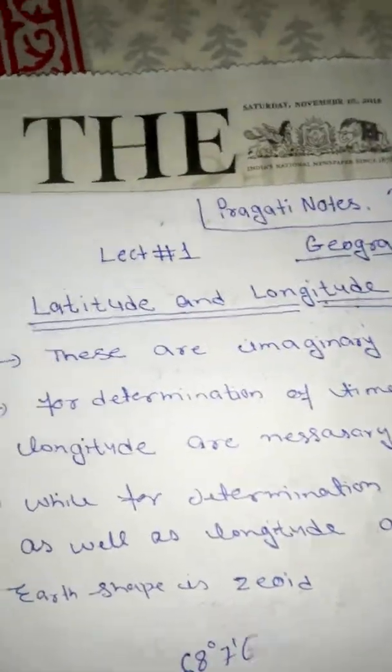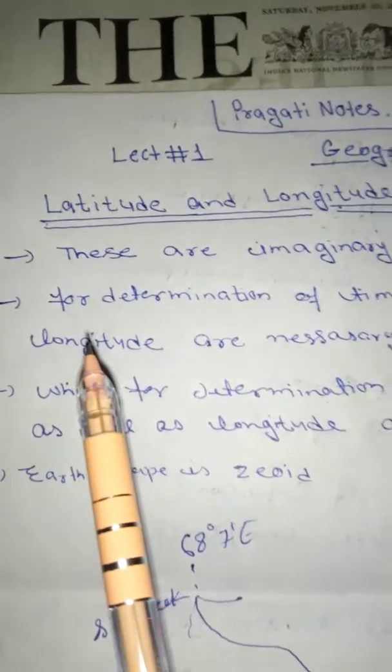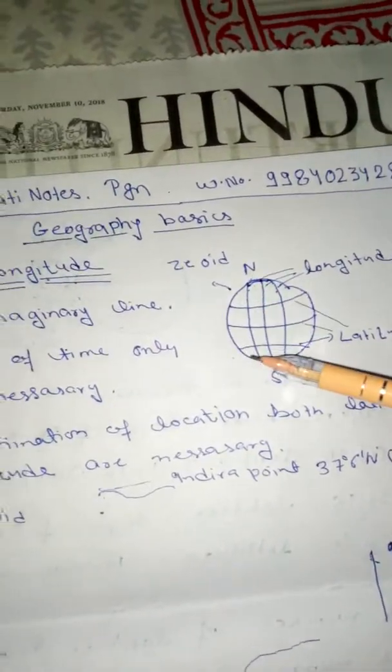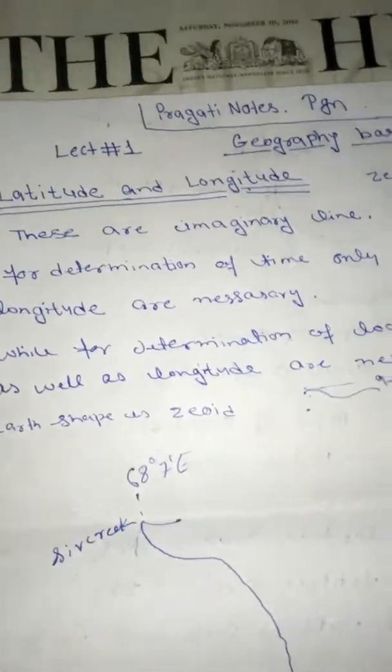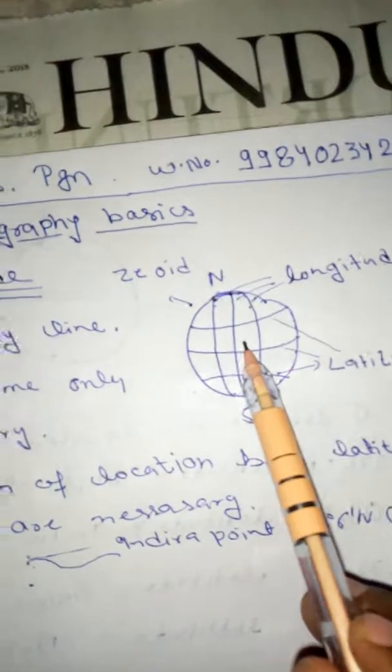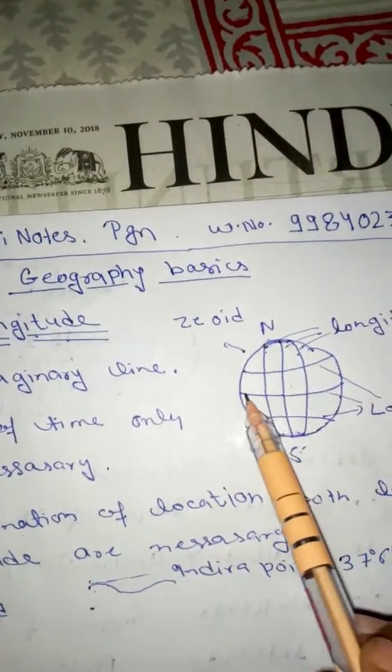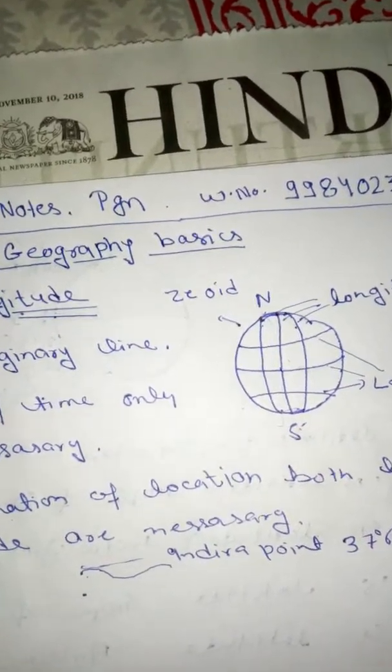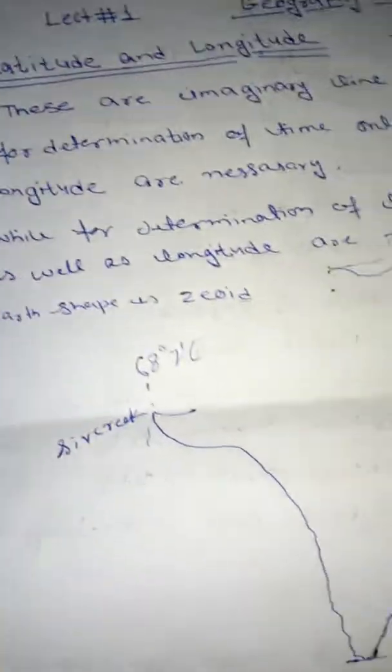These are imaginary lines. For determination of time only longitude, only longitude, these lines are only necessary. While for determination of our locations both latitude and longitude are necessary. If you want to say zero degree latitude it means inadequately a place, but if you said zero degree latitude and zero degree longitude means this proper point.